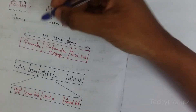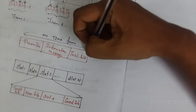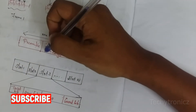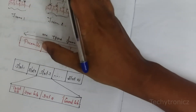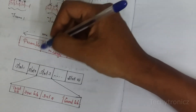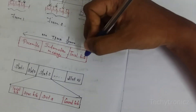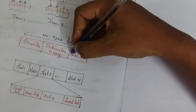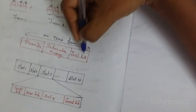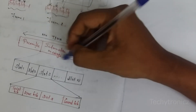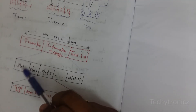One TDMA frame structure consists of: a preamble, an information message, and trail bits. The preamble contains address and synchronization bits, used by the base station or mobile station to identify each other. The information message contains the actual data. Trail bits are present in each slot.